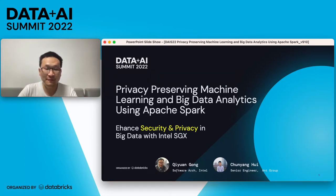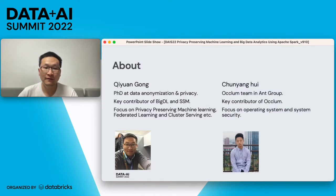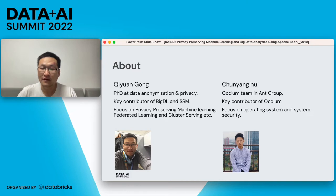Hi everyone, welcome to our session. In this session we will introduce how to enhance security and privacy in big data with Intel SGX. We can achieve privacy-preserving machine learning and big data analytics using Apache Spark. My name is Qiyuan Gong from Intel. I'm a software architect focusing on security, privacy, machine learning, and federated learning. My co-speaker is Chen Yang Hui from Ant Group, a software engineer focusing on operating system and system security.